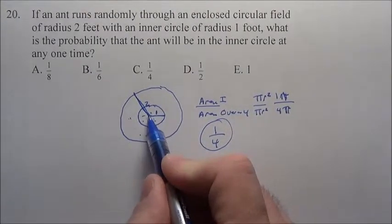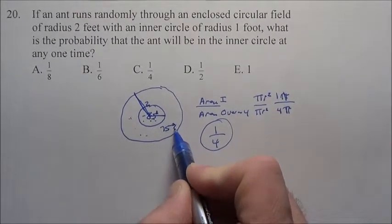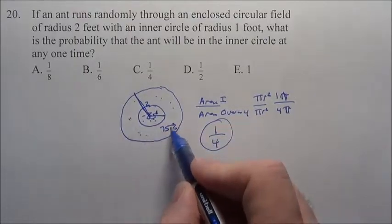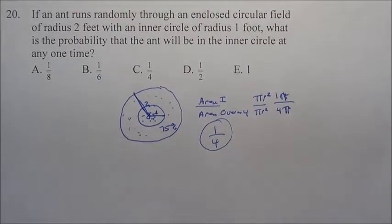So you have 25% of the space is here, the other 75% is out here. There's a 75% chance it's going to be out on the outside because there's 3 times as much area as what's on the inside there.